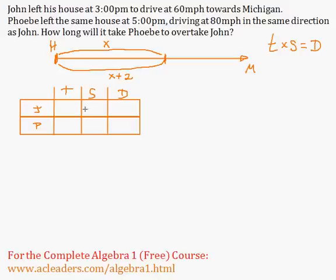So he's driving at 60 miles an hour. She's driving at 80. To get to that point where they meet up on the highway, it took John x plus 2, because he's driving slower. And took Phoebe just x amount of hours.